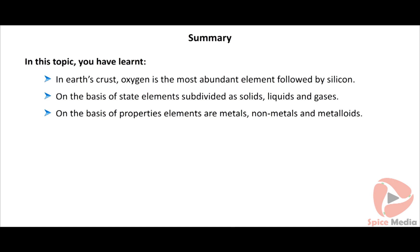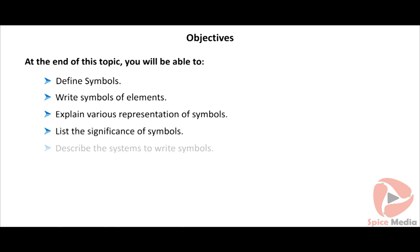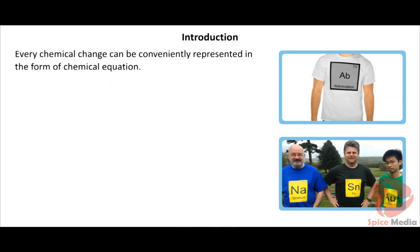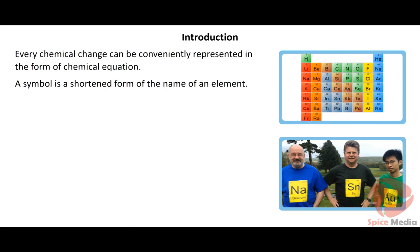At the end of the topic, you will be able to define symbols, write symbols of elements, explain various representations of symbols, list the significance of symbols, and describe the systems to write symbols. Every chemical change can be conveniently represented in the form of a chemical equation. A chemical change describing with the names of substances is difficult, so we need symbols for an element. It is more convenient to use the shortened forms instead of writing down long names. Similarly, in chemistry, symbols are used to represent names of elements. A symbol is the shortened form of the name of an element.